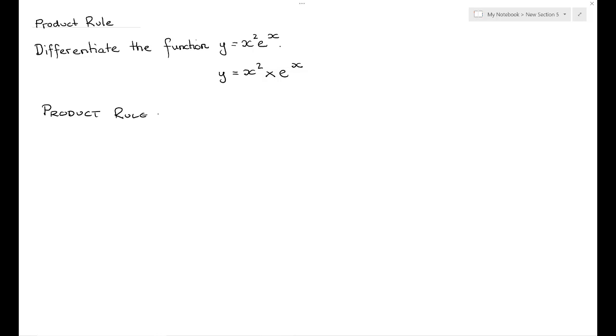Now the product rule tells us that if we have a product of two functions, in this case u times v, if you want to differentiate to find dy/dx, we are required first of all to differentiate the u with respect to x and multiply by v, and then we add to that the derivative of v with respect to x and multiply by u.